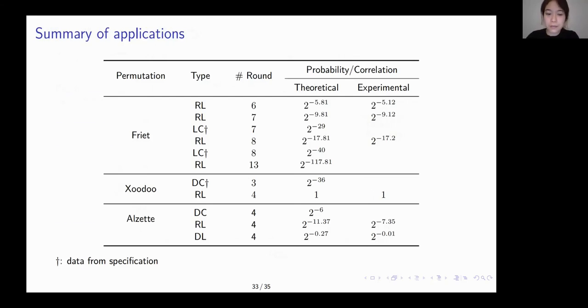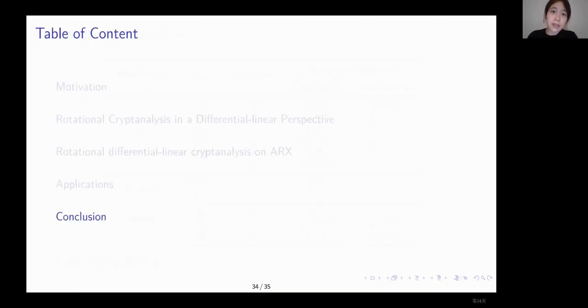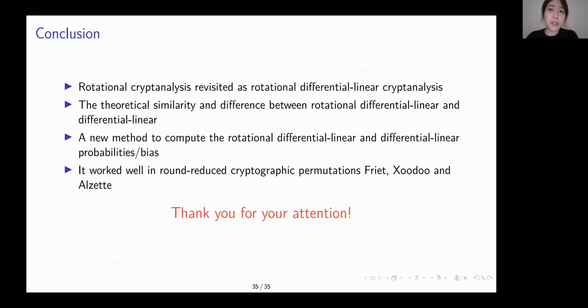To conclude, in this paper, we proposed a rotational differential linear cryptanalysis as a generalization of differential linear, and the theoretical analysis on rotational differential linear is given. Then, a new method for computing the probability is presented, which is efficient by evaluating round by round. Finally, our technique is applied to several permutations, where practical distinguishers are obtained. Thank you for your attention.